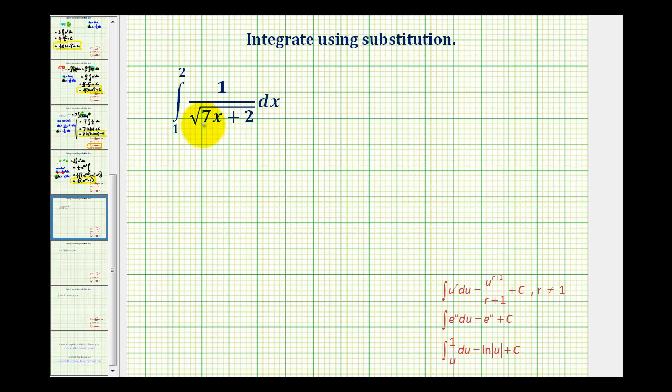We want to evaluate this definite integral using integration by substitution. So for the first step, let's go ahead and rewrite this as a rational exponent. So we'll have the integral from one to two of one divided by the quantity seven x plus two raised to the one-half power dx.